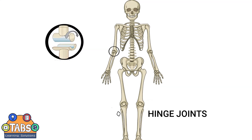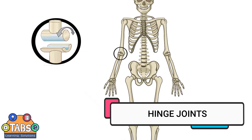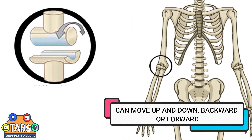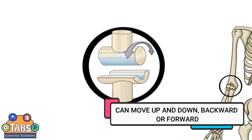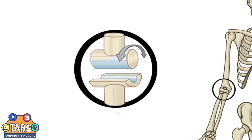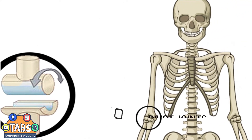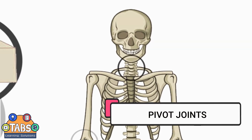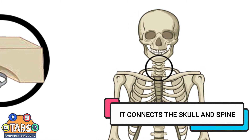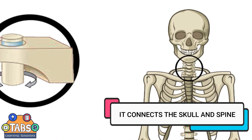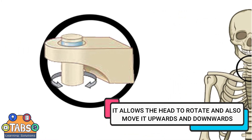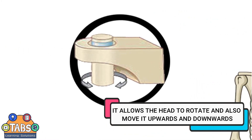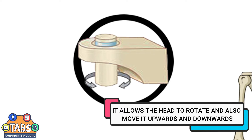Hinge joints. These joints can move up and down, backward or forward. Pivot joints. It connects the skull and spine. It allows the head to rotate and also move it upwards and downwards.